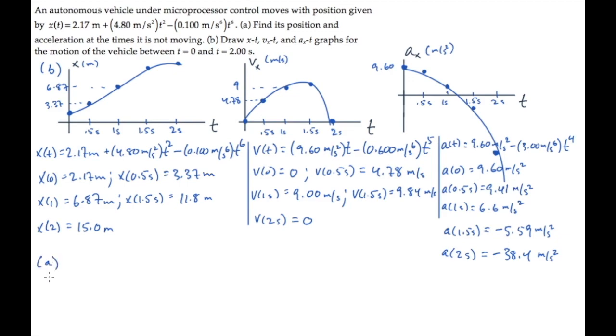In part A, they want to know the position and acceleration at times when the vehicle is not moving. That's those two times circled here when the velocities are 0. So now we just need to look up the position at times 0 and 2 seconds, and the acceleration at times 0 and 2 seconds. We've already calculated those, so we can just write them down. And here they are. And that solves part A.